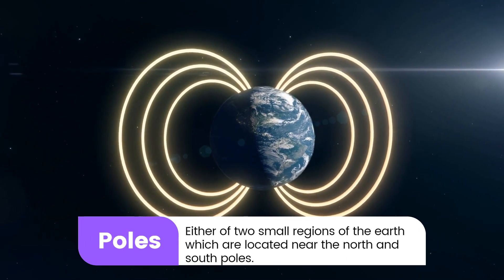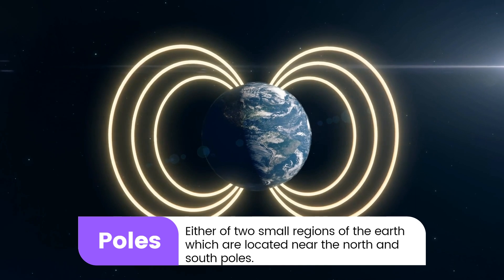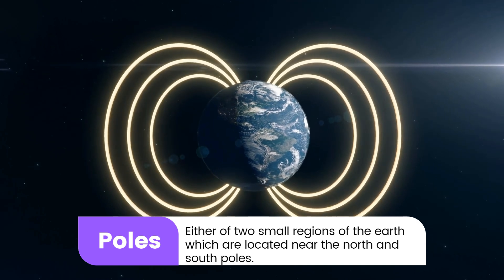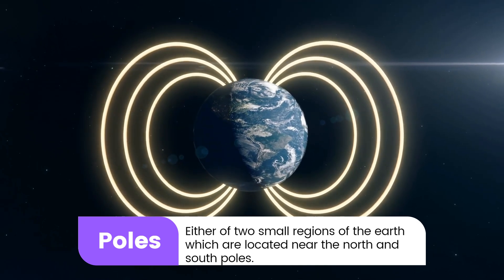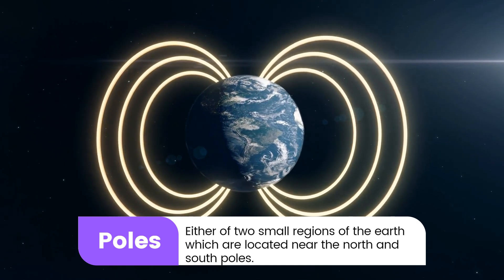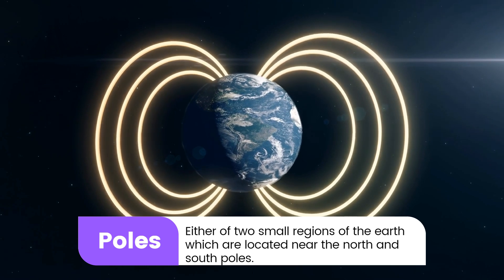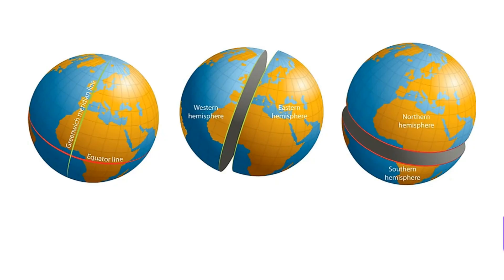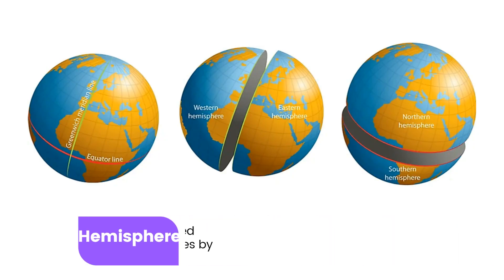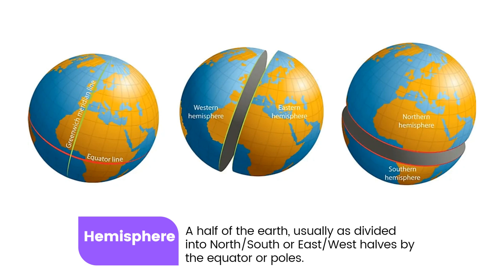9. Poles: Either of two small regions of the Earth which are located near the North and South Poles. 10. Hemisphere: A half of the Earth, usually as divided into North or South or East or West halves by the Equator or Poles.